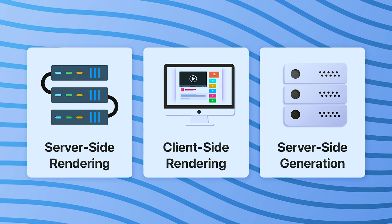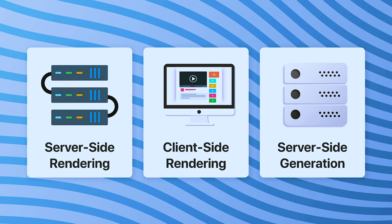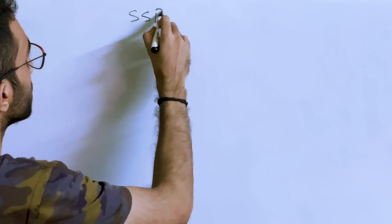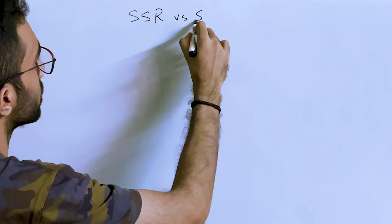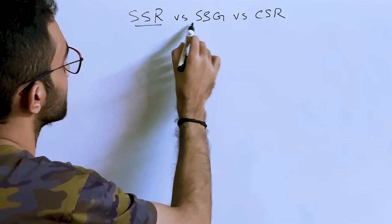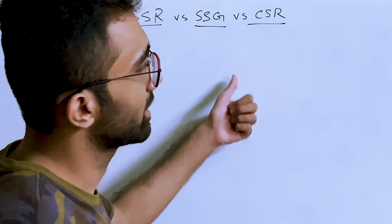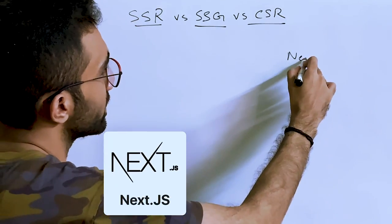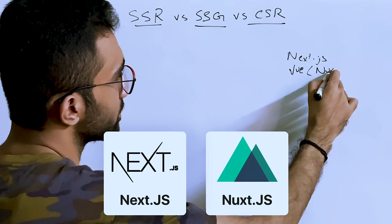Let's discuss the difference between Server-Side Rendering, Client-Side Rendering, and Static Site Generation — or SSR vs. CSR vs. SSG. These terms have been boosted a lot by recent frameworks like Next.js and Nuxt.js, but there's a critical difference between them.